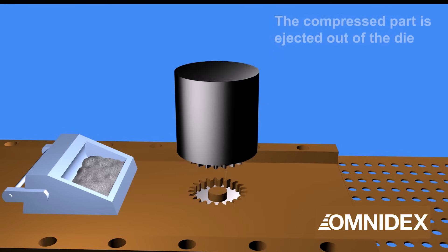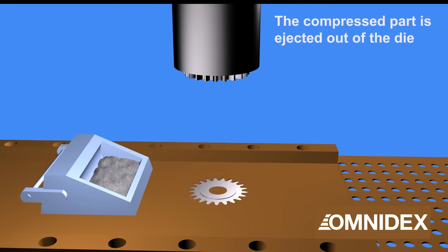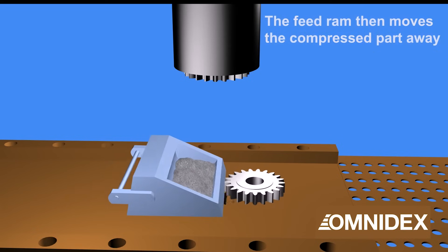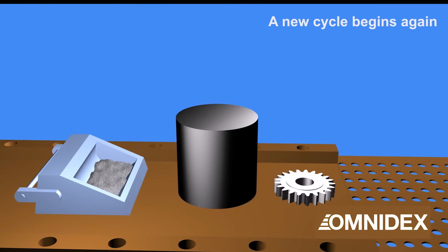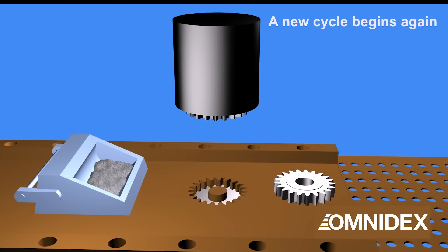The compressed part is then ejected and moved away by the feed ram. Material for the next round of pressing is simultaneously added into the die, and a new cycle begins.